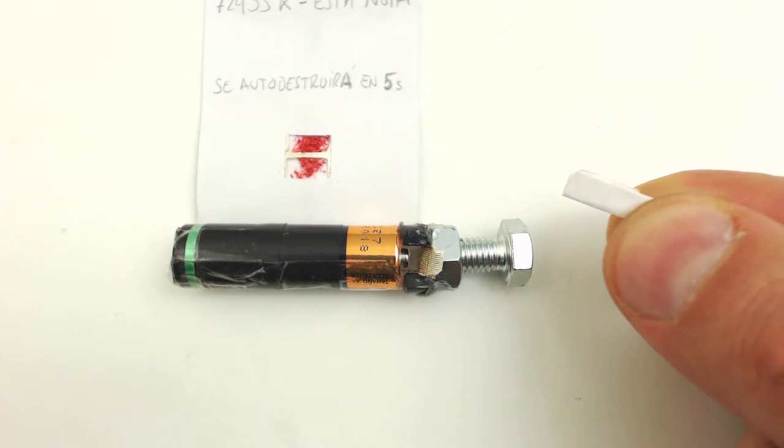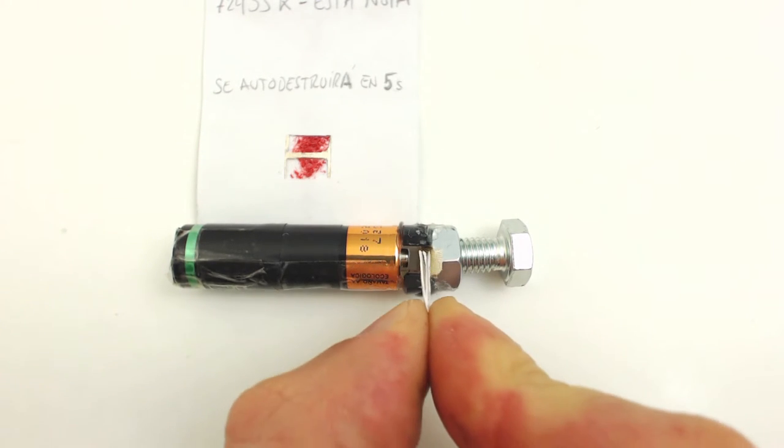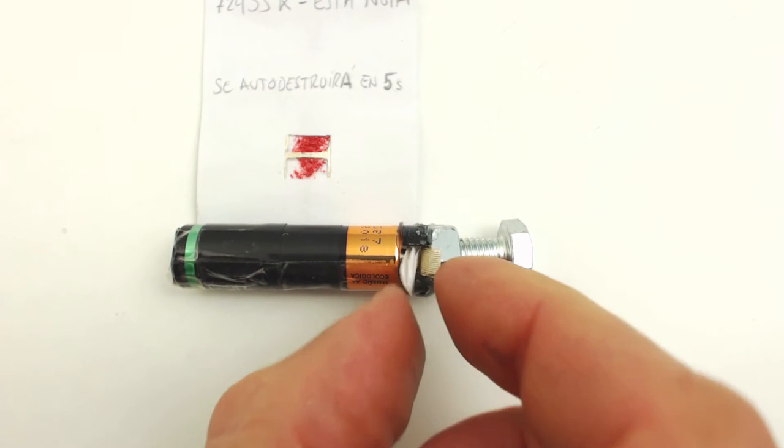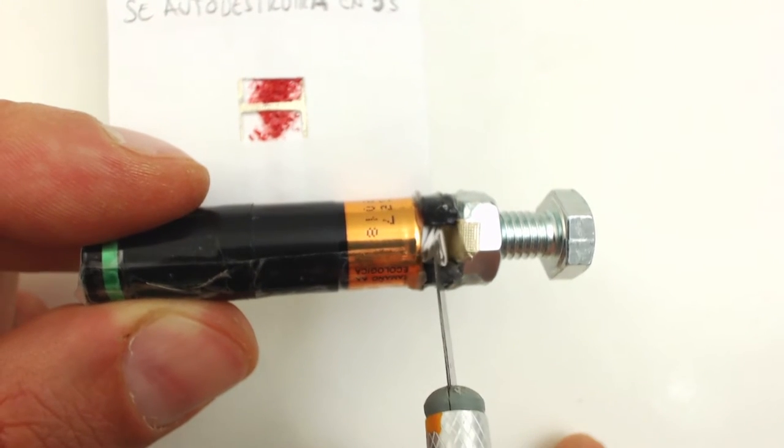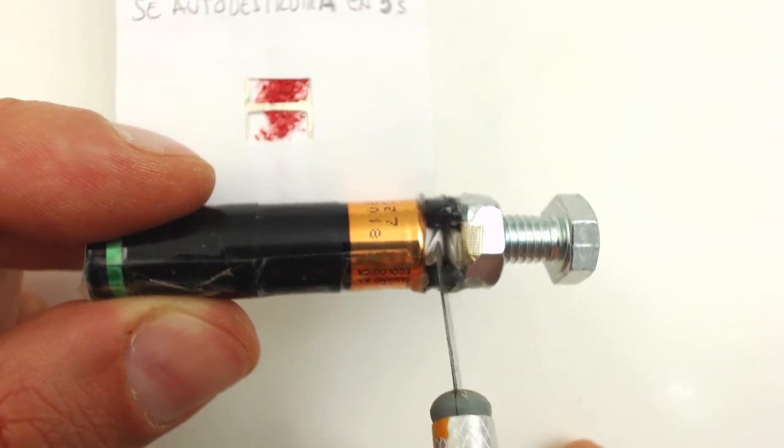Once attached with silicon, place a piece of paper between the battery and the metallic paper to avoid any accidents. This eliminates any risk of connection while we continue making the mechanism.